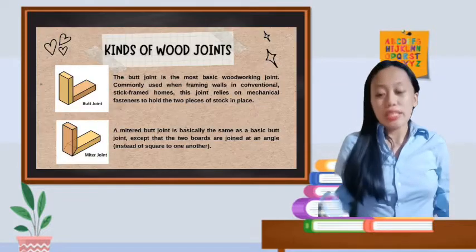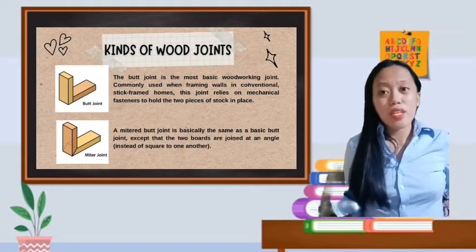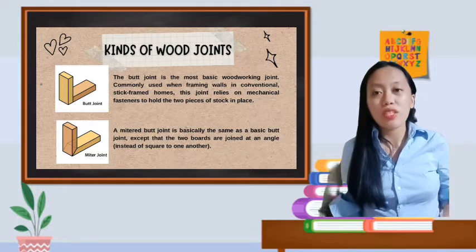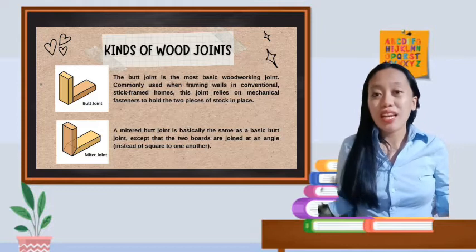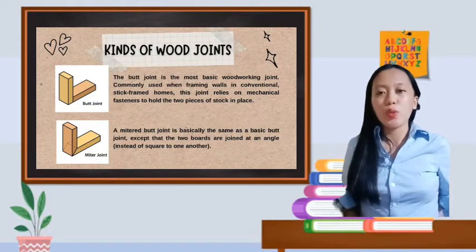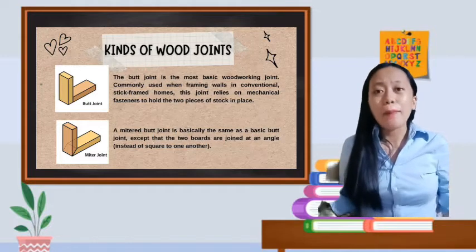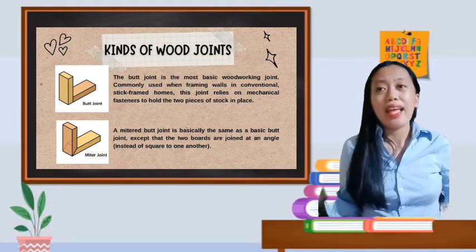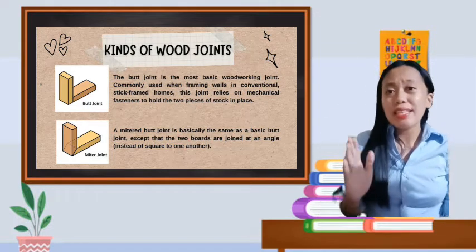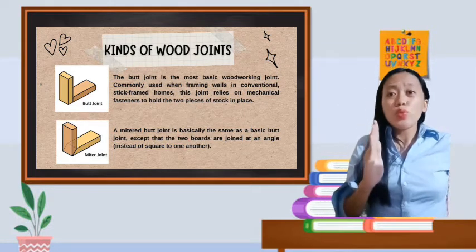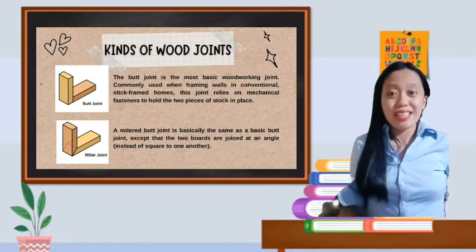Let's proceed to the types of different wood joints. First one is the basic butt. The butt joint is the most basic woodworking joint, commonly used when framing walls in conventional stick-frame homes. These joints rely on the mechanical fastener to hold the two pieces of stock in place. In simple terms, the basic joint is the simplest and easiest to make. If you notice in the picture, it is just two pieces of wood joined together.